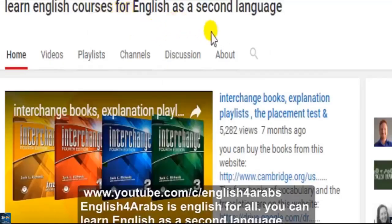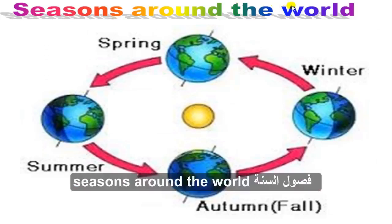You can learn English as a second language. Seasons around the world — how many seasons are there around the world? Spring, summer, autumn — that's the British term, with a silent N — or fall, as we say in American English. Winter.